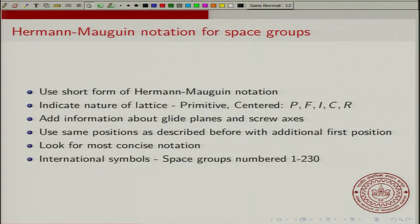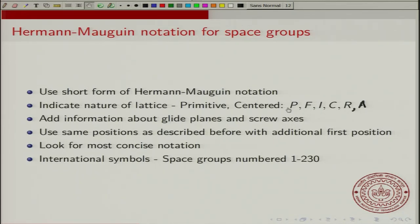Some general rules in writing the Hermann-Mauguin notation: you can use the short form. There are also cases where the long form is used, but we will stick to the short form. We will indicate the nature of the lattice, which can be primitive or centered — it can be P, F, I, C, or R. There is also a possibility of having an A-centered lattice in some special cases. R is only for the R-centered hexagonal lattice.